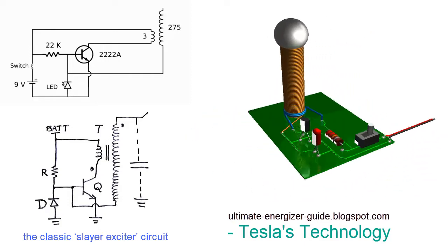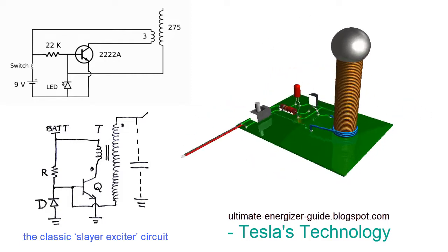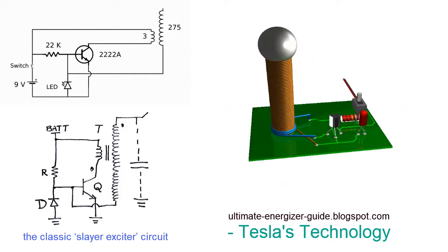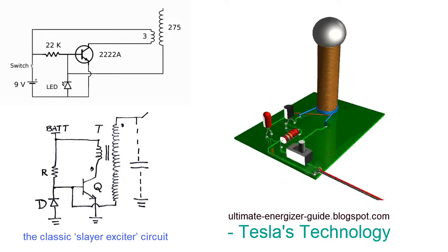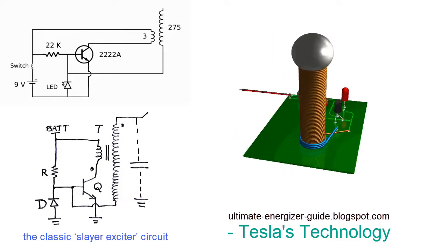We know that transformer needs AC to work but we have supplied DC. So this circuit which is called slayer exciter circuit is used. Also use power BJT as normal BJT gets overheated.